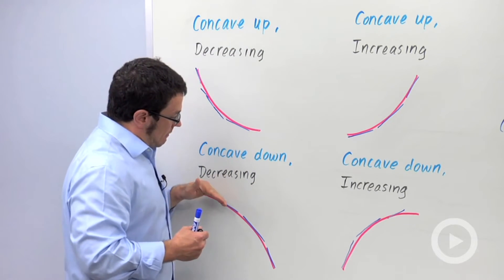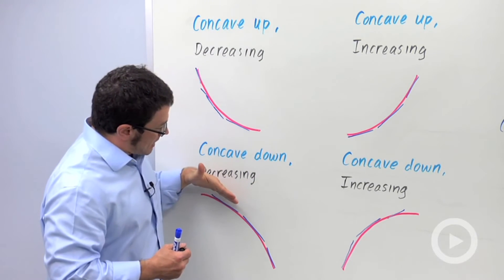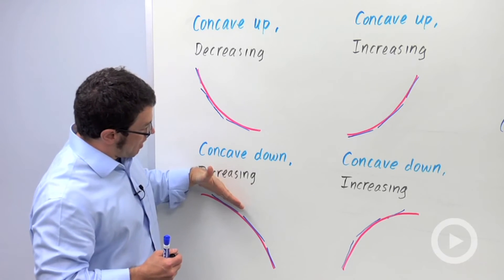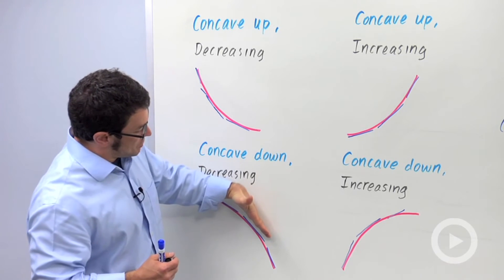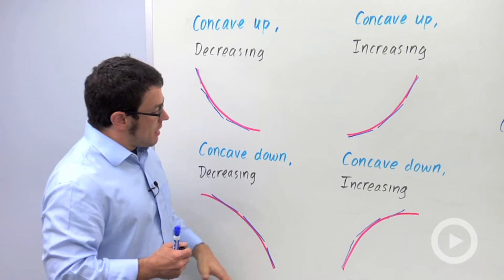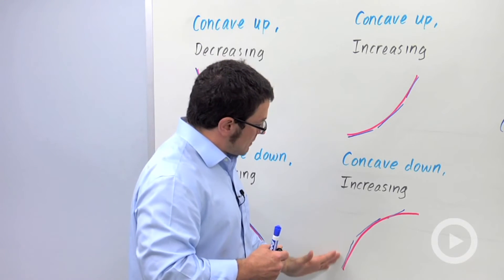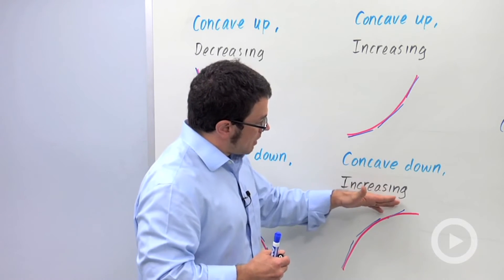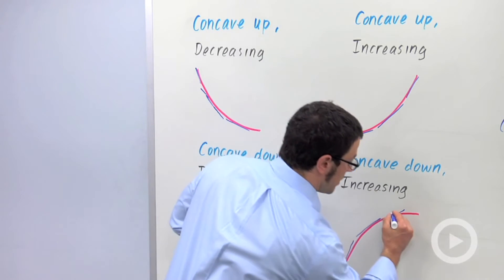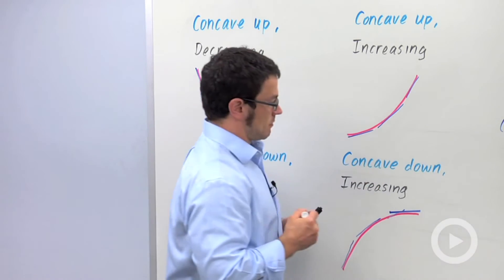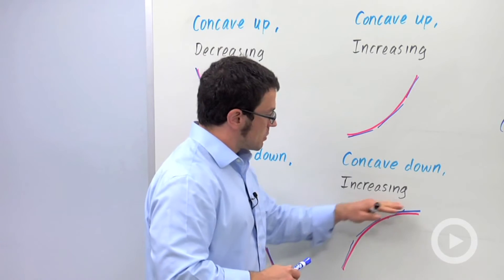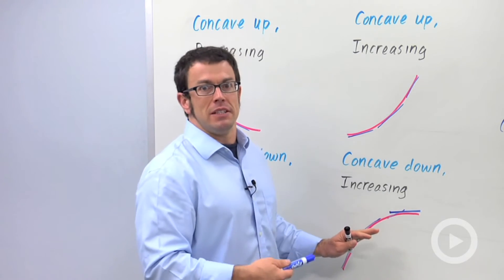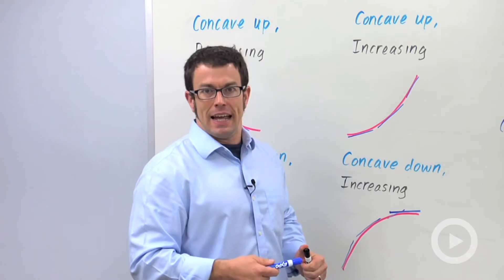Now when a graph is concave down, the opposite is happening — the slope of tangent lines is decreasing. This might be negative one, this might be negative two, negative four. And over here, you've got positive slopes — like maybe this is five, this is one, this is maybe one-quarter. The slopes are decreasing here. And so you'd say that f prime is decreasing, or f double prime is negative.